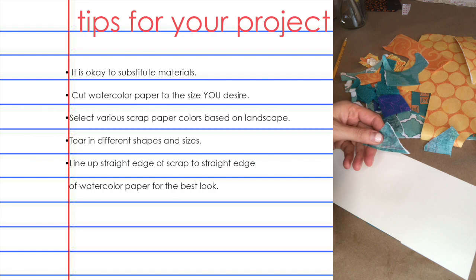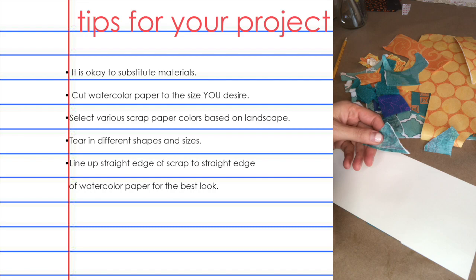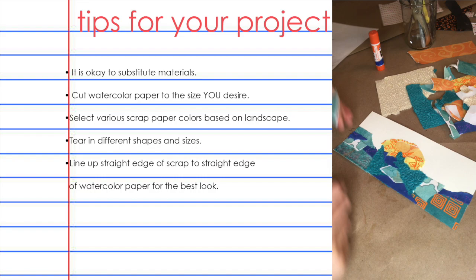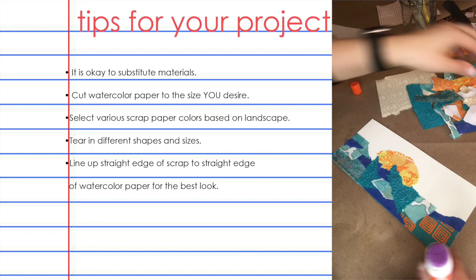This little white edge is so cool — when you place these pieces on your landscape, if you're doing a seascape or a sunrise over water like I'm doing, this will actually look like the crest of a wave. After you've torn your paper, make sure that your straight edges line up with one another — flush edges, straight edge to straight edge.